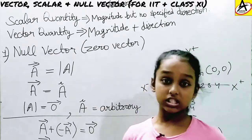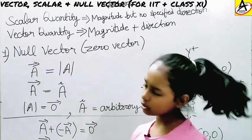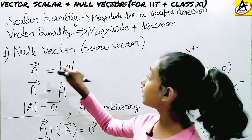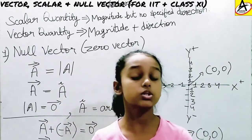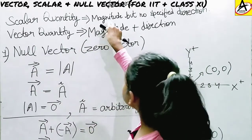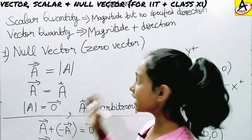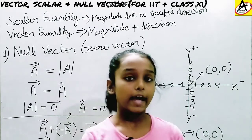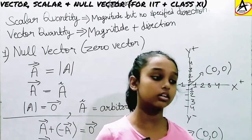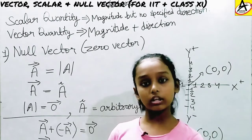To recap: arbitrary direction means not certain direction. In a null vector, there is no certain direction, but the magnitude is always equal to zero. Vector quantity has two factors — magnitude and direction — while scalar quantity has only magnitude with no specified direction. There are more types of vectors like equal vectors, unit vectors, parallel vectors, and anti-parallel vectors, which will be discussed in other videos. Thank you for watching.